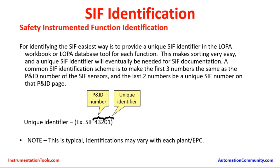These are all the basic requirements and needs of the Safety Instrumented Function. We understood what SIF is, how it is used in the process plant, how to number it, and what kind of tag to use in the field for identification by maintenance and operations personnel for routine maintenance or fault attendance. This has to be followed thoroughly to avoid any mistakes. Thank you.